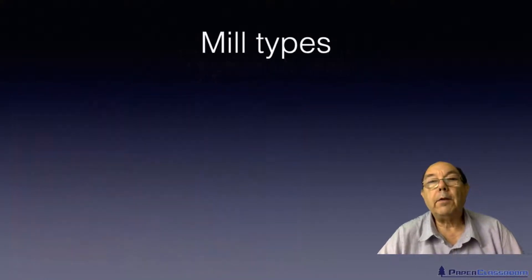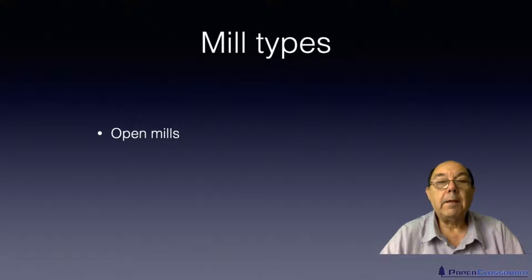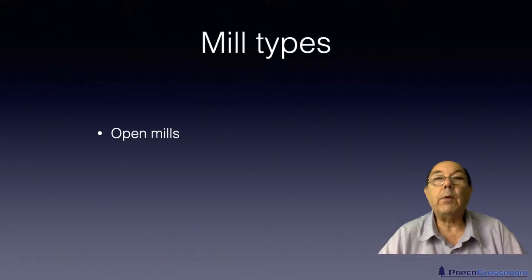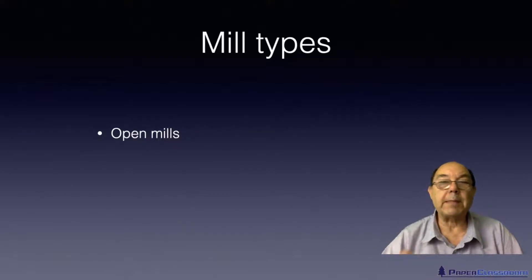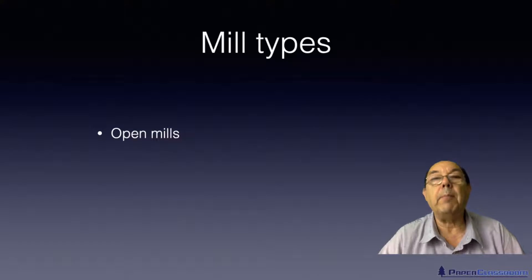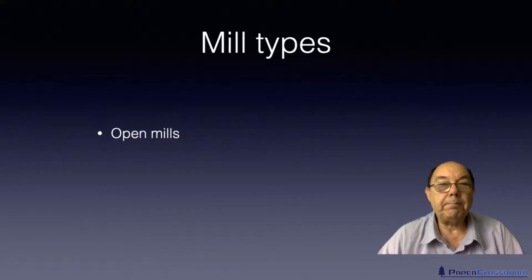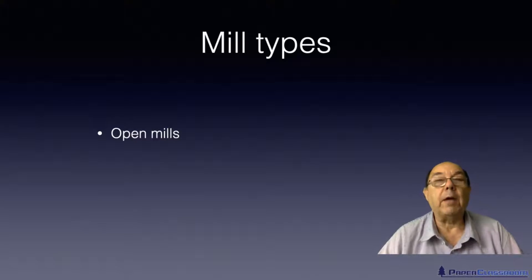There are actually three types of mill. There's what's called an open mill. With an open mill, they bring in water, they use it once by passing it through the paper making system, and then they discharge it. A lot of mills used to operate like that but now it's very rare to find one.